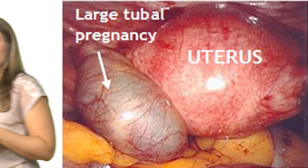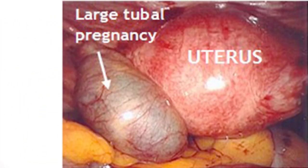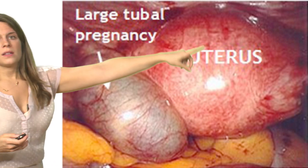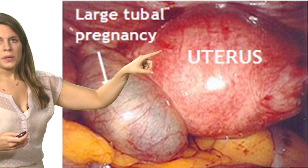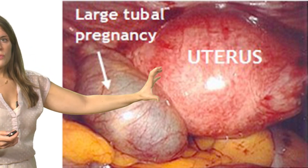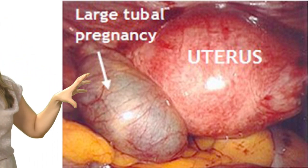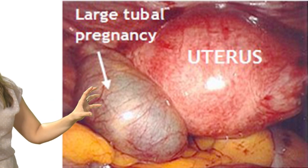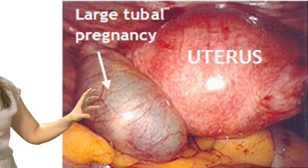This is an image of an ectopic pregnancy on laparoscopy, showing a patient who required surgery. You can see the uterus and a very enlarged fallopian tube with a pregnancy inside of it.